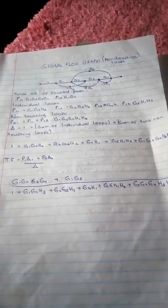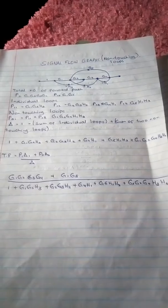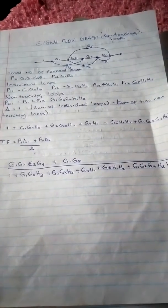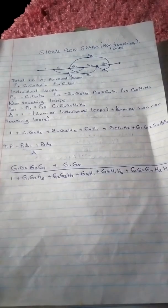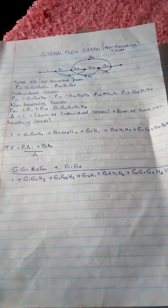The transfer function is P1 Delta 1 plus P2 Delta 2 over Delta. The forward paths are the ones you write on the upper part, that is the numerator.